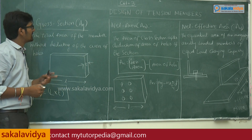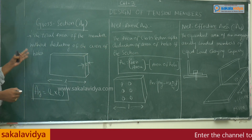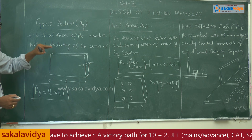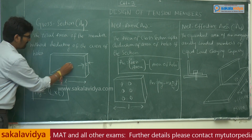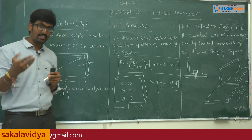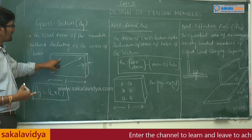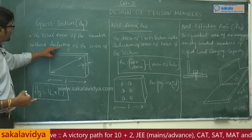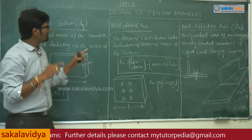Another important topic in the design of tension members is gross area section, net area section, and net effective area section. The gross area section is defined as the total area of a member without deducting the area of holes. The gross area equals L × T — simply length multiplied by thickness of the section.